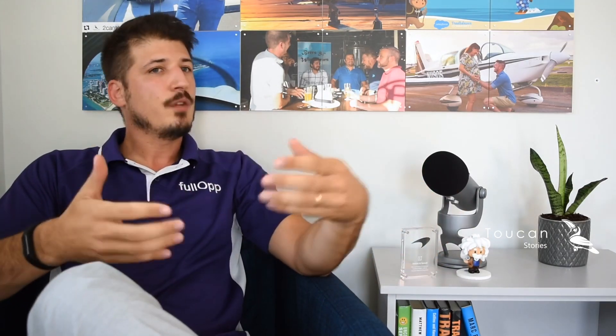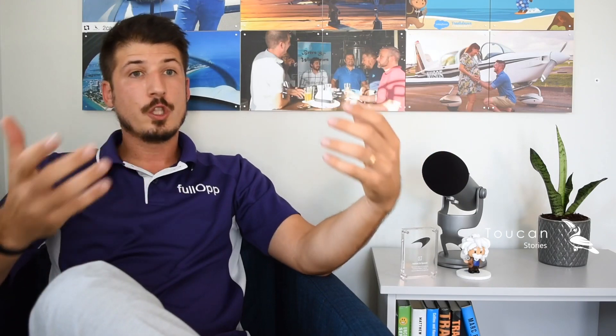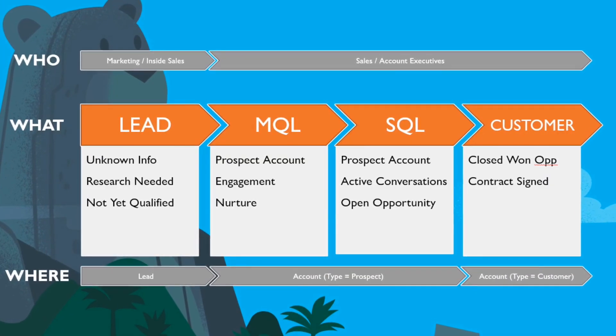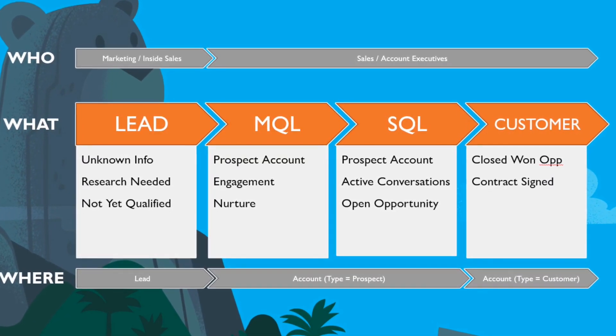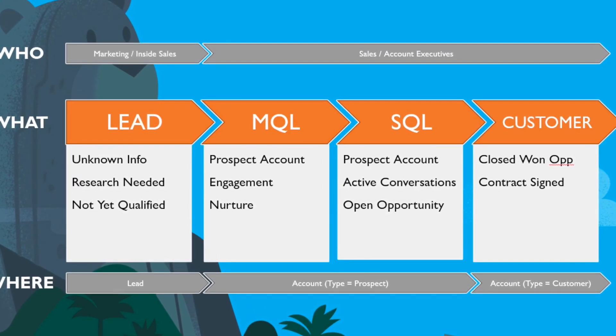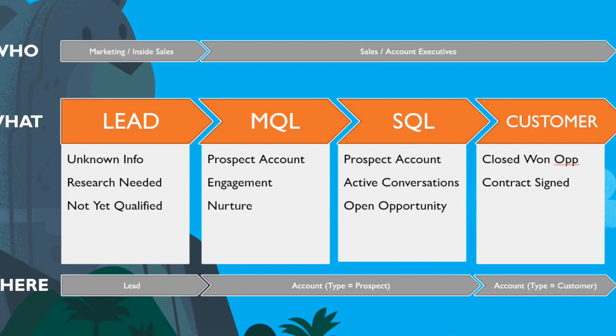The bottom line is that leads is a bucket of unknowns where you want to drop as much data as you can for someone to sift through to see what's good or not — and whatever is good goes to the sales team. Now, it's important to talk about the large stages of a lead. You may have many different steps in qualification, but at its base you're talking about leads, marketing qualified leads, sales qualified leads, and basically a customer.